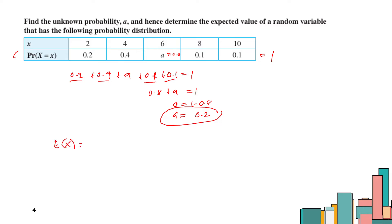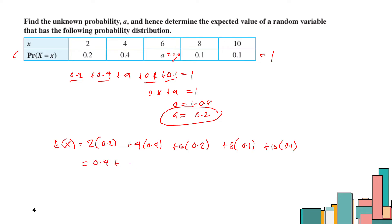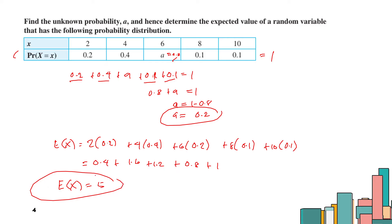Now that we have a equals 0.2, we can find the expected value by multiplying each x by its respective probability. E(X) equals 2 times 0.2 plus 4 times 0.4 plus 6 times 0.2 plus 8 times 0.1 plus 10 times 0.1, which gives 0.4 plus 1.6 plus 1.2 plus 0.8 plus 1. The expected value equals 5.